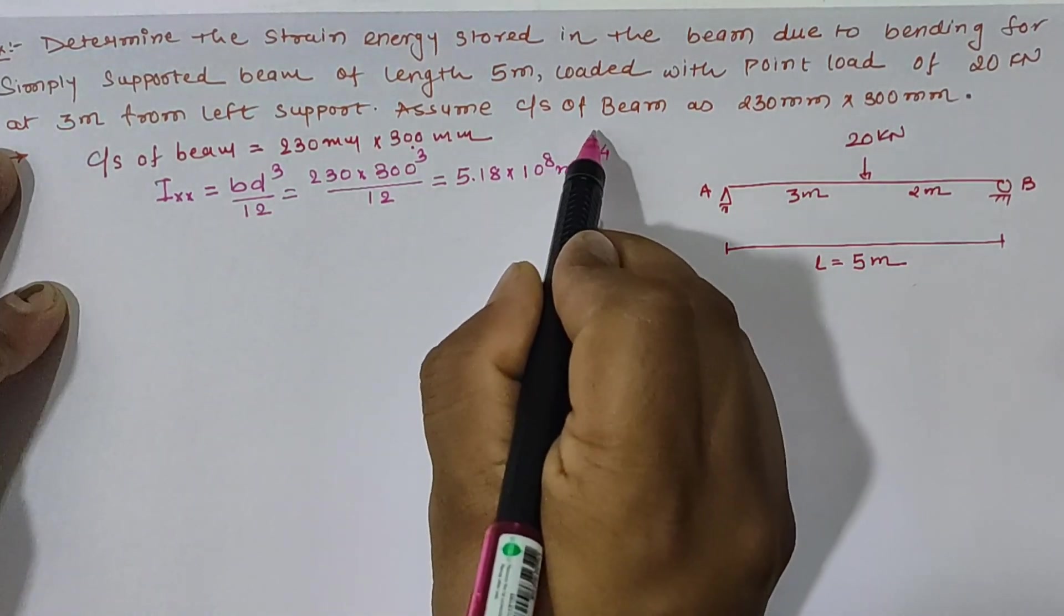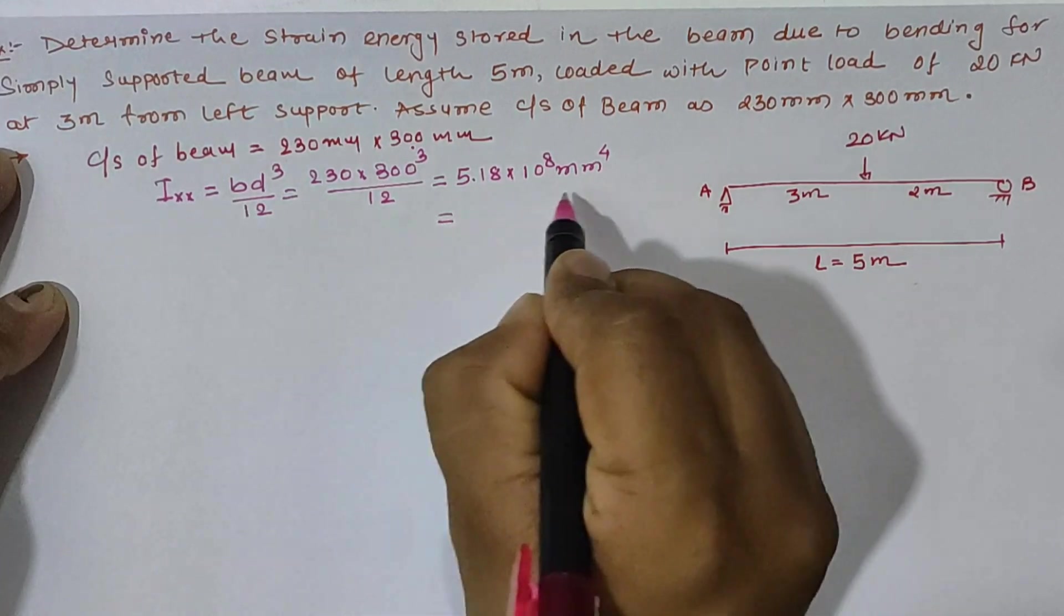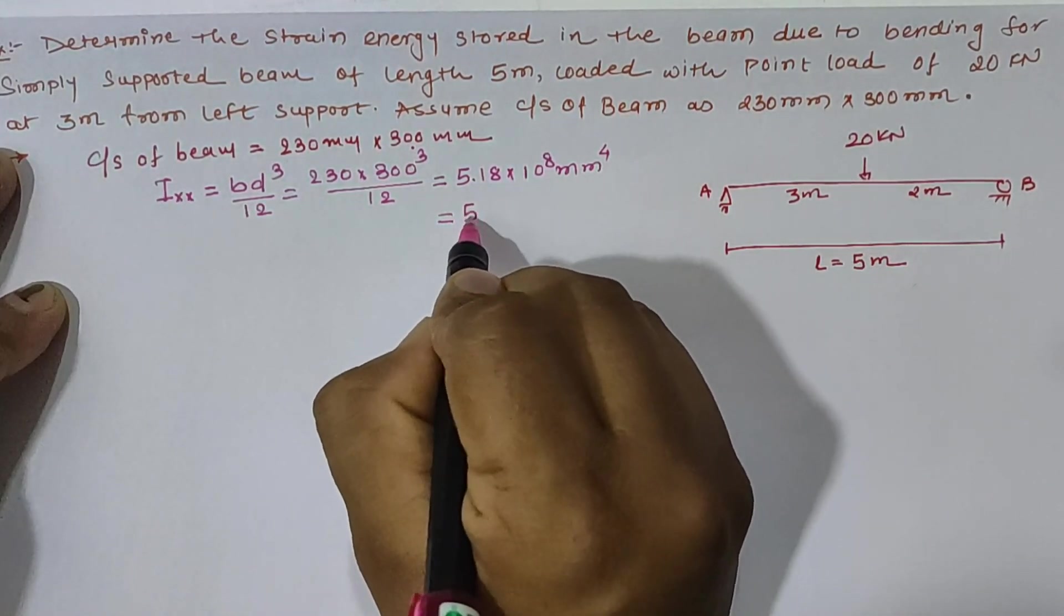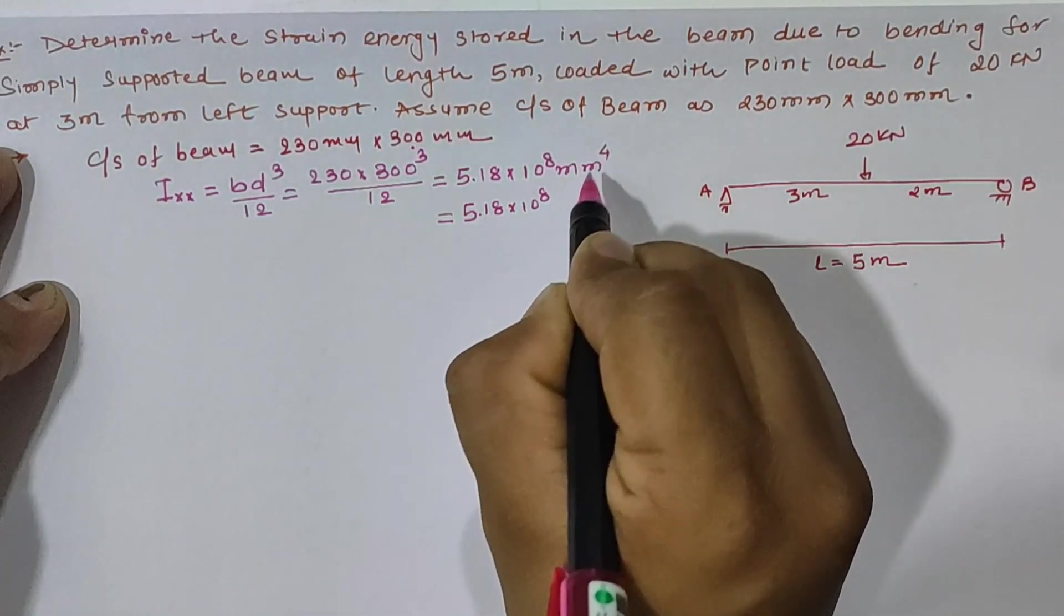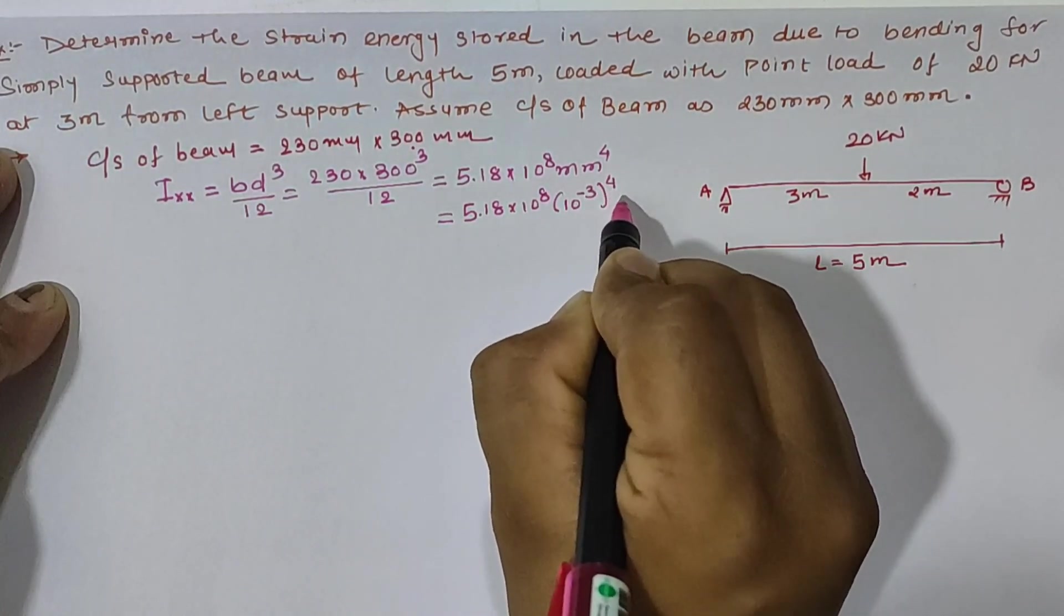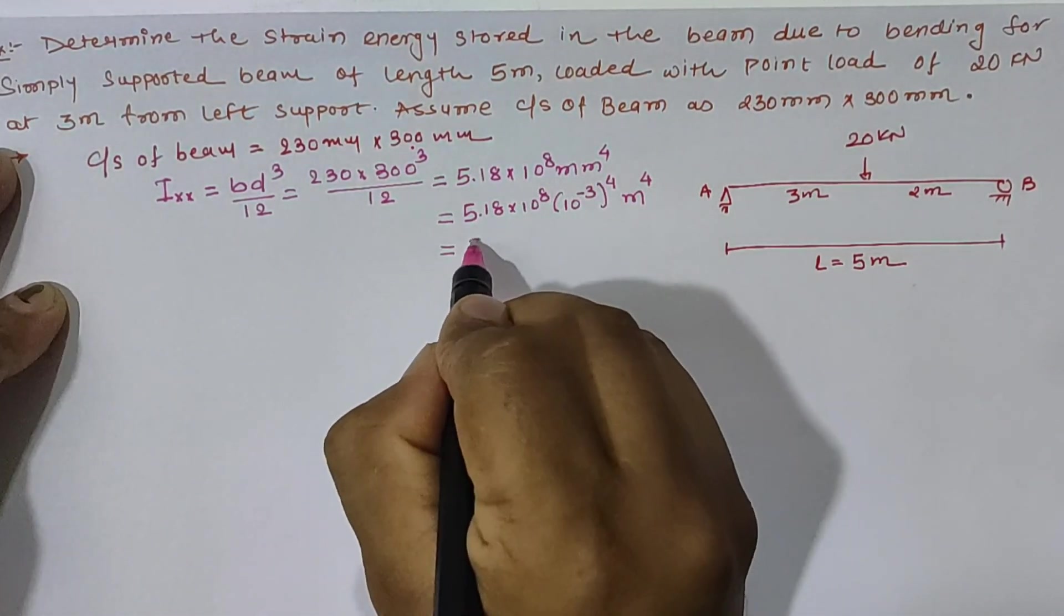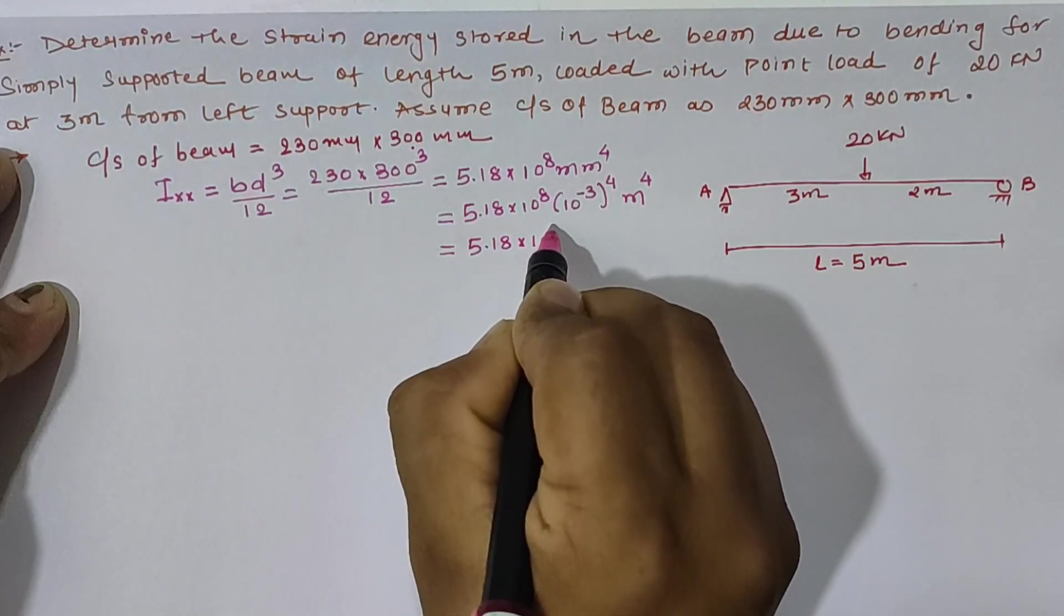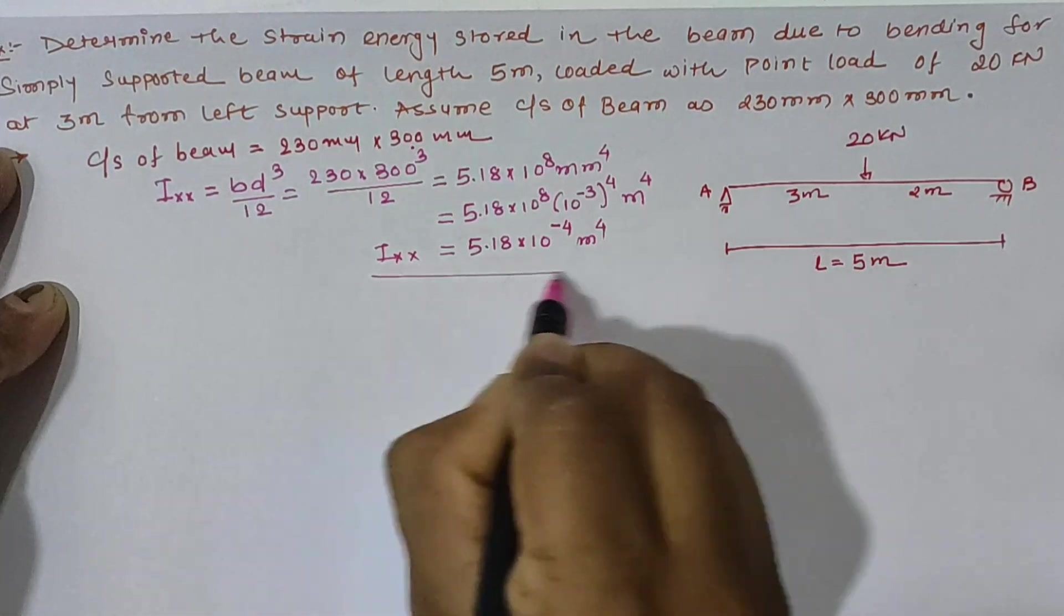Now, if we convert it into meter⁴, then for 1 mm it is 10⁻³. Hence, for mm⁴, it is 10⁻³ raised to 4 in terms of meter⁴. Hence, total value is 5.18 x 10⁻⁴ in terms of meter⁴ in terms of Ixx.